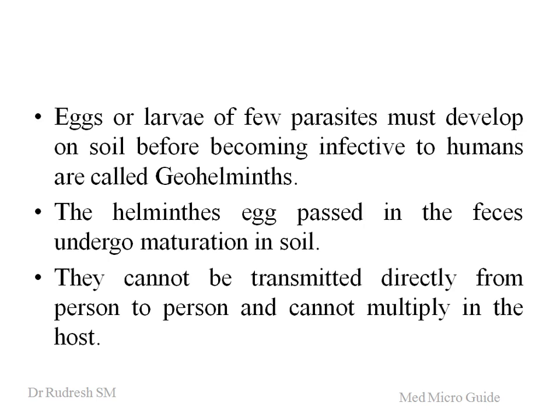Usually the helminthic eggs are passed in the feces. They undergo certain steps of maturation in the soil and then they become infective to another human being. Usually they cannot be transmitted from person to person, and also they cannot multiply in the same host where the eggs are produced.